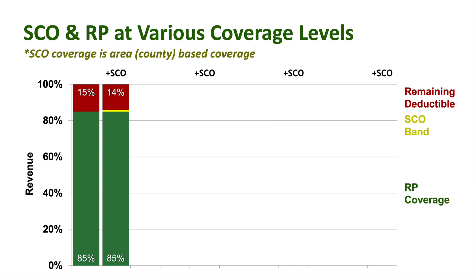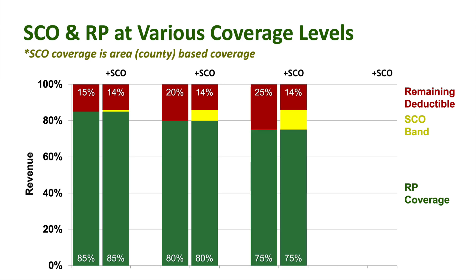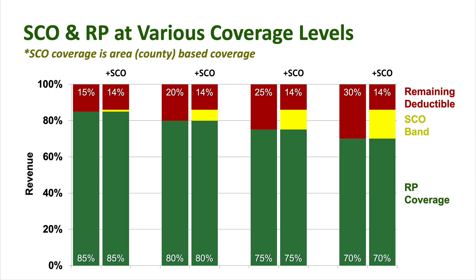SCO kicks in at 86% of the county level. On this first slide, if you purchase 85% RP, SCO kicks in at 86%, so you're only looking at 1% extra coverage on top of your farm level coverage. At 80% RP coverage, you'd be getting 6% SCO. At 75%, you'd be looking at 11% SCO coverage, and of course 70% coverage level on RP would allow you to purchase 16% SCO.